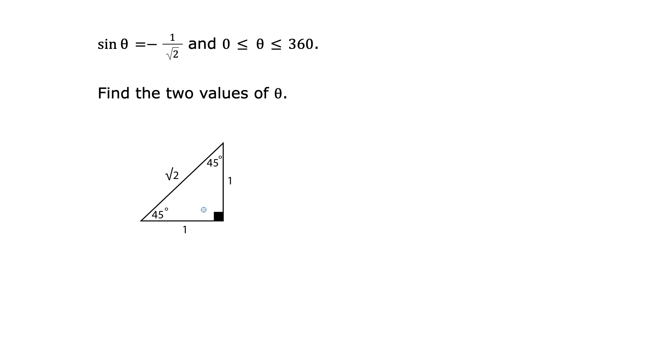Now using simple trigonometry, we know that sine theta, sine of the angle, is opposite over hypotenuse. Well opposite in this case is 1, and the hypotenuse is root 2. So we know that sine of the angle, which is 45 degrees, is 1 over root 2.